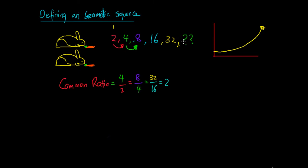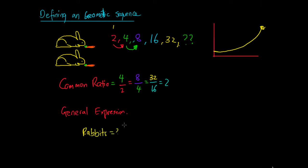So every next number in our series is just the previous number multiplied by 2, and we call this the common ratio. What we're looking for is a general expression — specifically, a general expression for the number of rabbits I have. We know that I started with 2 rabbits. We're trying to find some way to express the number of rabbits in some form of x, which we'll denote as f(x), a function of how many rabbits I have.